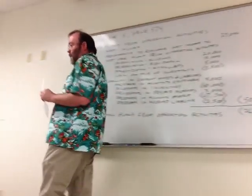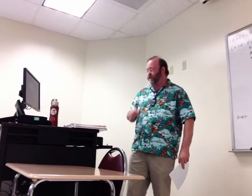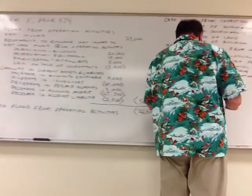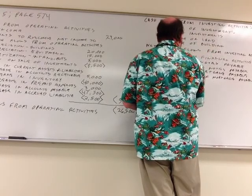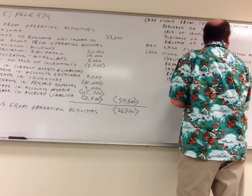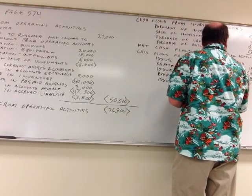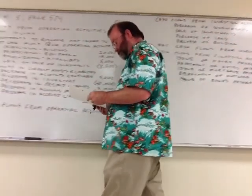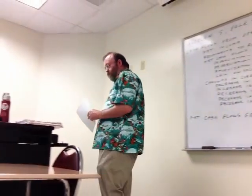Bonds payable went from $190,000 up to $250,000, and the paragraph said we issued $60,000 of long-term bonds at face value — no premium, no discount. So we have an issuance of bonds payable of $60,000, and that's a positive. That's it for the liabilities; now we're into stockholders' equity.